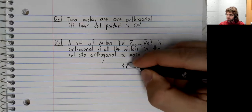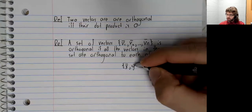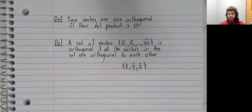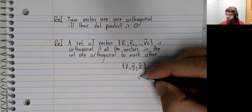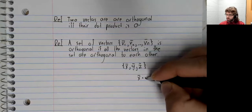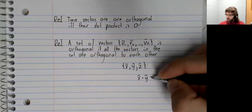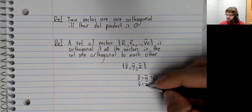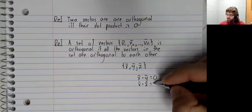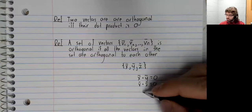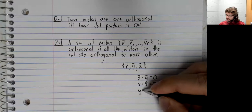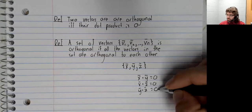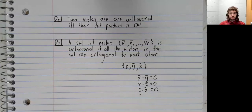So if we had vectors x, y, and z, for this to be orthogonal, x and y have to be orthogonal, x and z have to be orthogonal, and y and z have to be orthogonal.